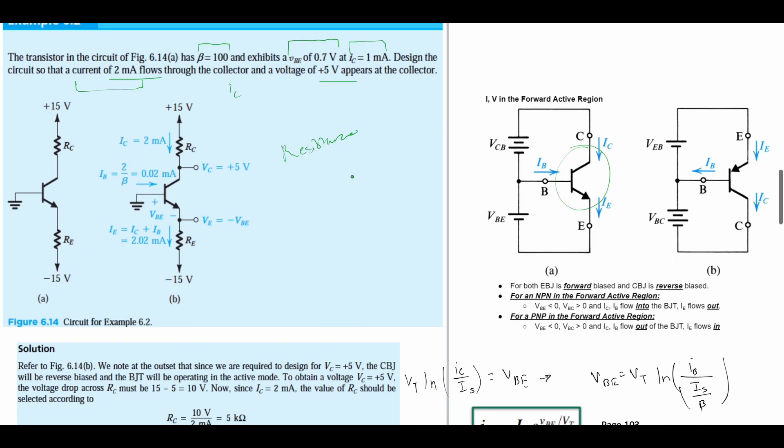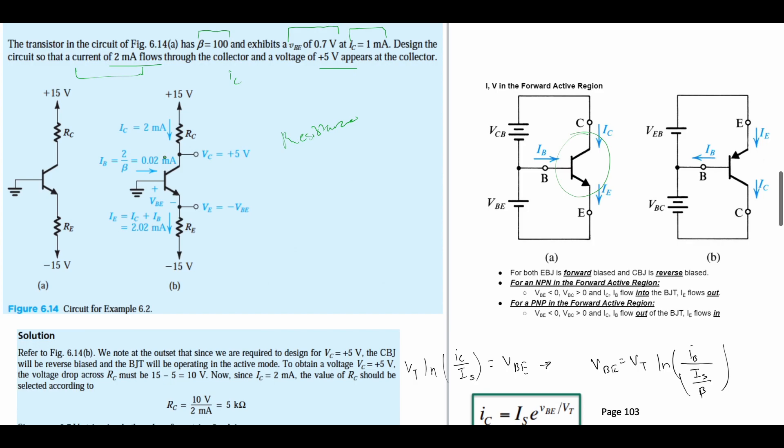First we start with our RC. That's the initial thing we're looking for. We know our base is going to be grounded, so that helps us out. We have our VC right here and we're going to have our VE right here.